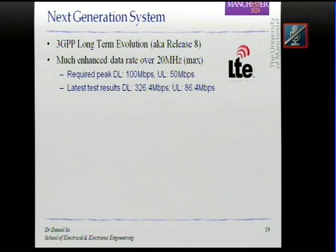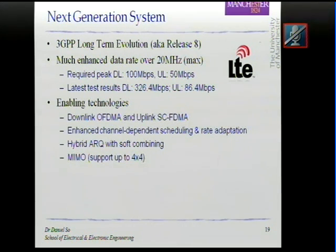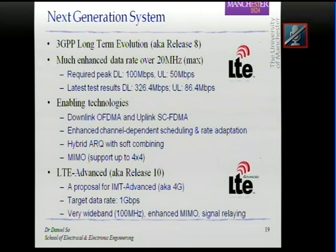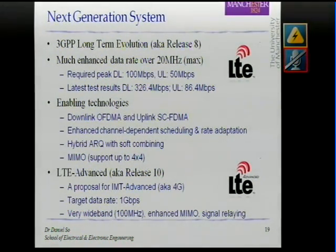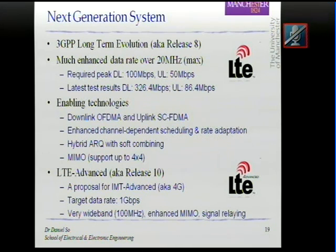The latest tests give 326 Mbps, which is much higher even than your DSL or home internet connection. There are many enabling technologies: OFDMA, single-carrier FDMA, MIMO, and others, with much research being applied to LTE to achieve better performance. As mentioned, LTE is considered 3.9G. There is 4G coming, whose target data rate is 1 Gbps — which is huge. One of the proposals is LTE Advanced, also called Release 10. It is being developed at the moment and incorporates the latest research, such as enhanced MIMO, signal relaying, and cooperative communications.